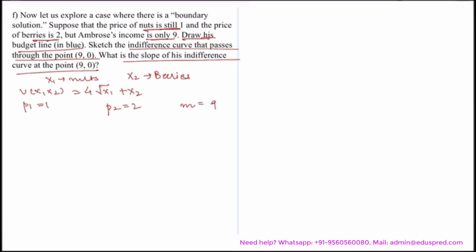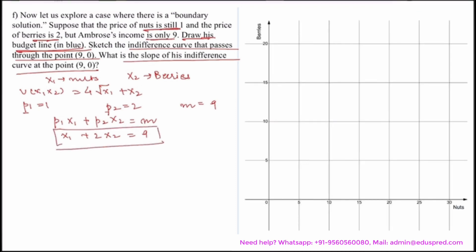We are asked to draw his budget line. The budget line is formed by setting expenditure equal to income: P1·x1 + P2·x2 = M. Substituting the values gives x1 + 2x2 = 9. On the graph, the x-axis represents nuts and the y-axis represents berries, and this equation is plotted as the blue budget line.